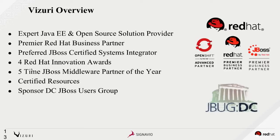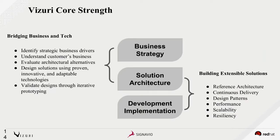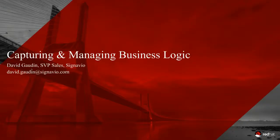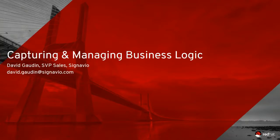A little about our background: Vizuri has been in business for 15 years, specializing in open source products including Red Hat and Signavio. We help organizations transform into the digital transformation environment, which is the paradigm shift of digitizing information and processes. Our core strength is truly understanding your business strategy and creating alternatives, because every organization is different and on its own path for transformation. What you need is reference architectures, continuous delivery, and the ability to be resilient and scalable.